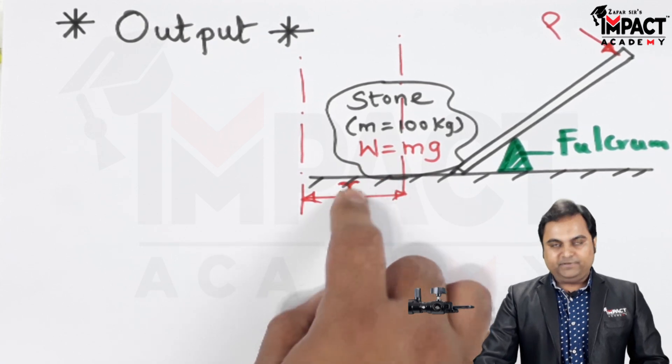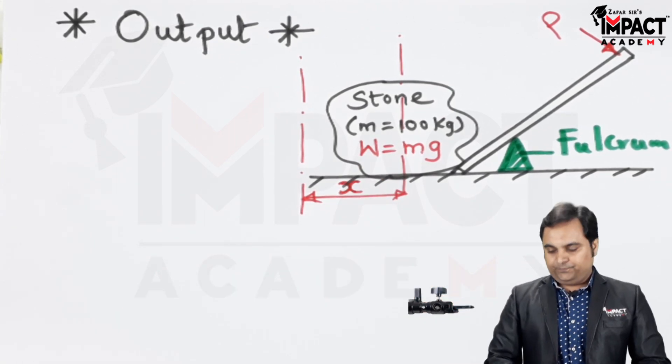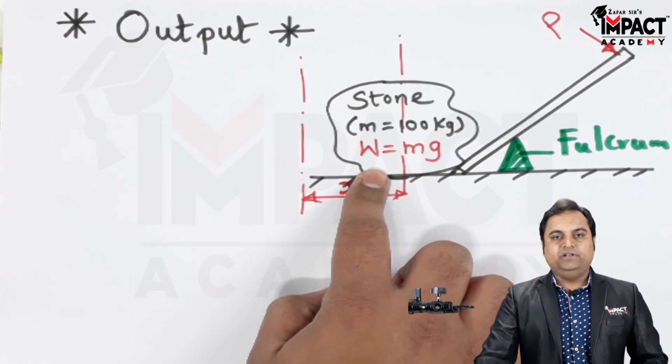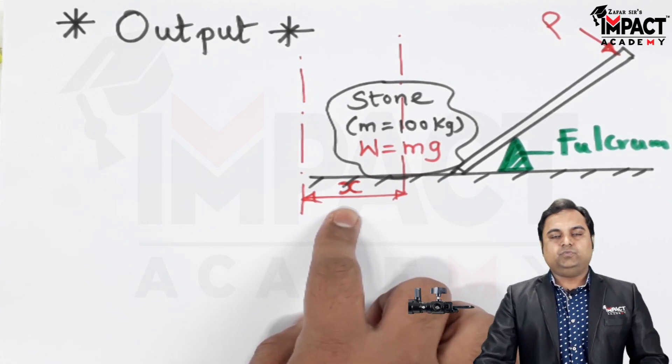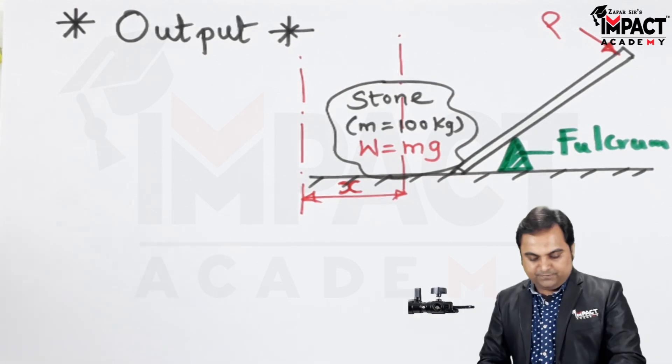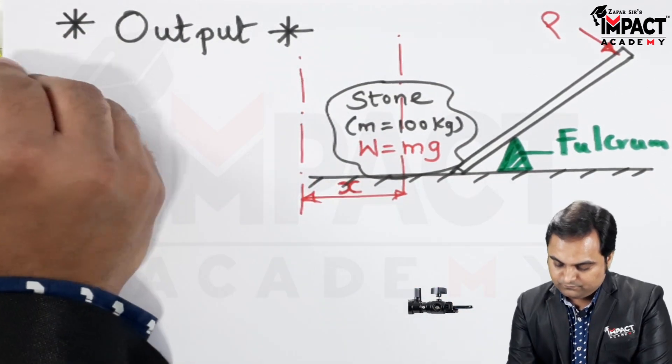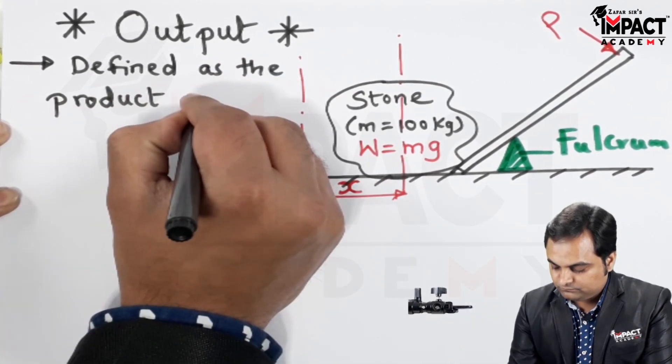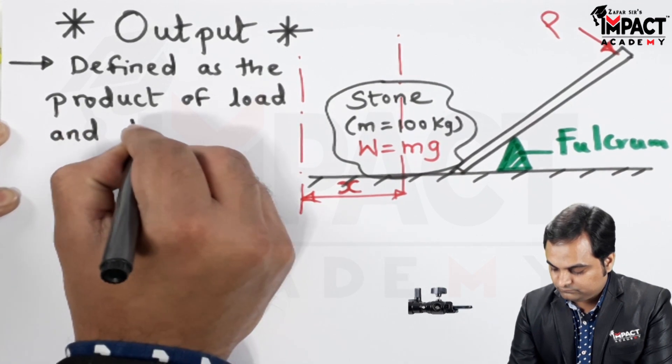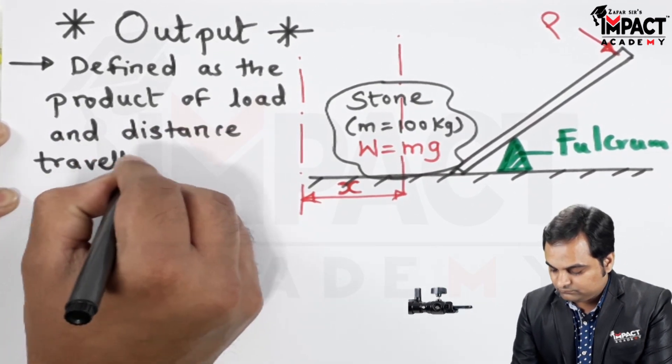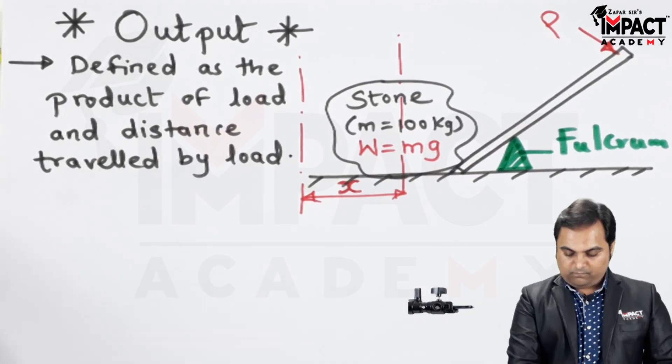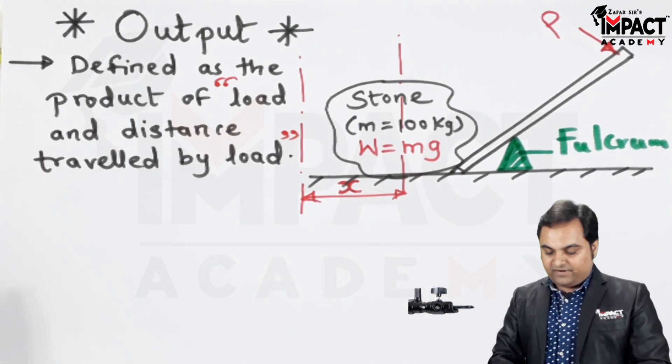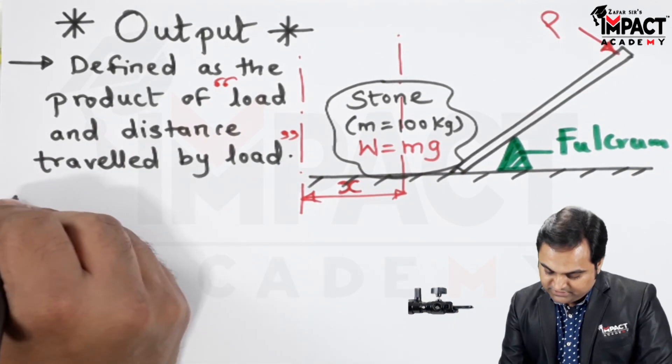So the distance covered by the load and the load itself, when both of them get multiplied, that is called as the output. So output can be basically defined as the product of the load to be lifted into the distance which is traveled by that load. So I'll write the definition: defined as the product of load and distance traveled by load, then it is given by the formula.